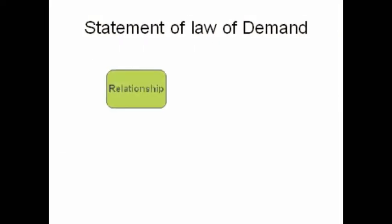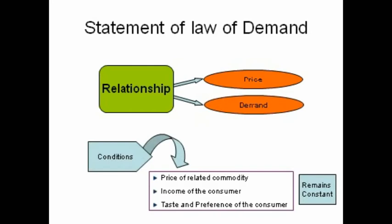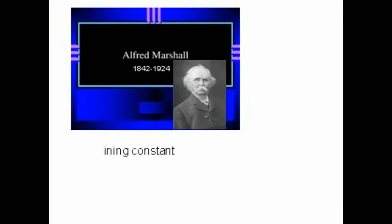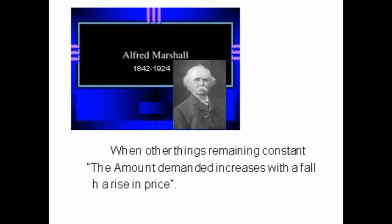Statement of law of demand: The law of demand states the relationship between the price and the quantity demanded of a commodity, assuming other factors — i.e., price of related commodity, income of the consumer, and taste and preference of the consumers — remain constant. According to Alfred Marshall, when other things remain constant, the amount demanded increases with the fall in price and diminishes with the rise in price.